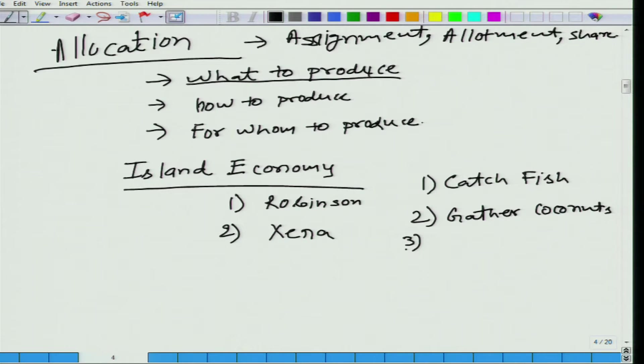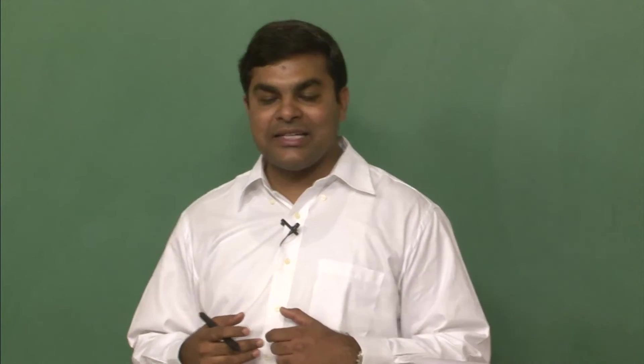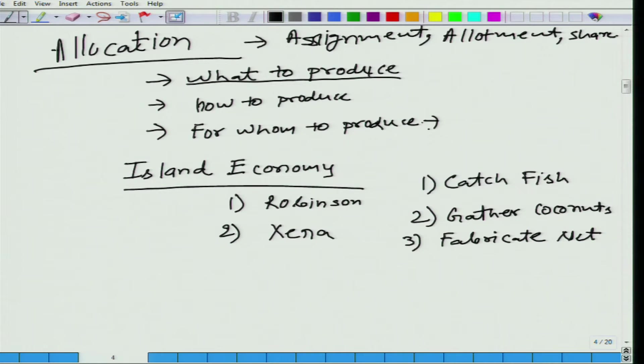To understand 'how to produce,' let us bring in a third activity: they can fabricate a net that would help them catch fish. So, 'how to produce' involves whether they are going to use their bare hands to catch fish or they are going to make a net. This decision is about technology — what kind of process they would use to produce these items. The third question is once they have produced, how they are going to share the collected coconuts and fish among themselves — Robinson and Zena.